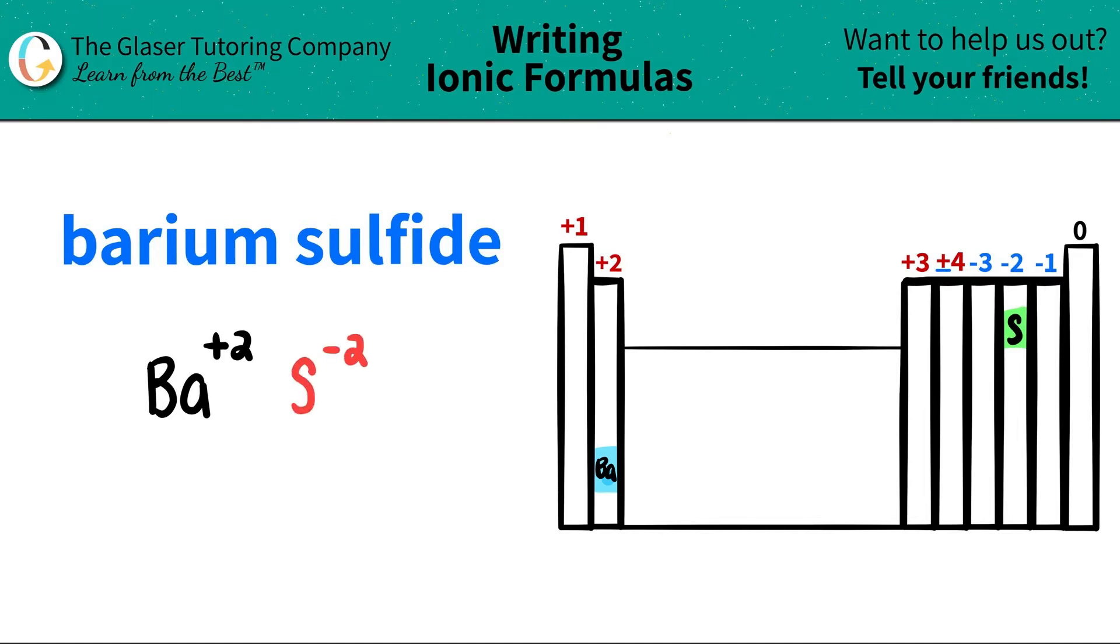Now, since we have the two elements and the two charges, all we got to do is take those charges and crisscross them to see how many of each element I need. So this plus 2 crisscrosses down, telling me that I needed two sulfurs, and this negative 2 crisscrosses down, telling me that I need two bariums.